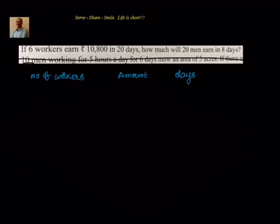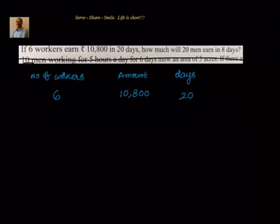In the first case, there are 6 workers, the amount is 10,800, and the number of days they took to earn is 20 days. What we have to find out? 6 workers earn 10,800 in 20 days — how much will 20 men earn? That means I do not know the amount.